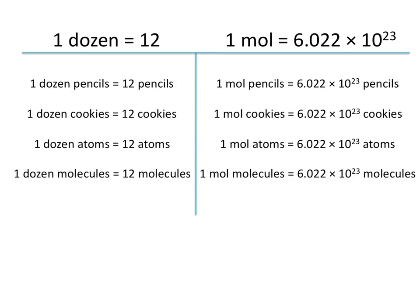A dozen could also be applied to some more typical chemistry terms. If you have a dozen atoms, you have 12 atoms. Or if you have a dozen molecules, you have 12 molecules. And the application of a mole is the same. So you could have a mole of pencils — if you had a mole of pencils, you would have 6.022 times 10 to the 23rd pencils. If you had a mole of cookies, you would have 6.022 times 10 to the 23rd cookies. But more commonly, we talk about moles in relation to atoms or molecules.